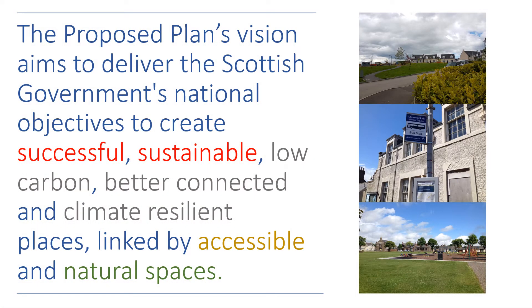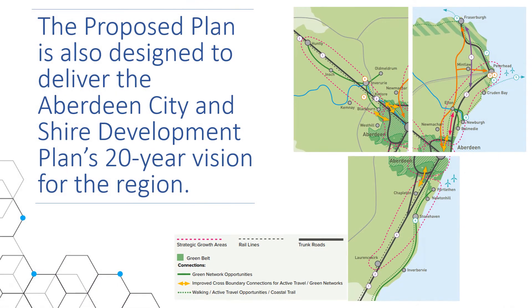The proposed plan's vision statement aims to deliver the Scottish Government's national objectives. These are to create successful, sustainable, low carbon, better connected and climate resilient places, linked by accessible and natural spaces. It is also designed to deliver the Aberdeen City and Shire Strategic Development Plan's 20-year vision for the region.